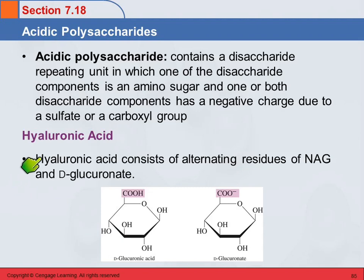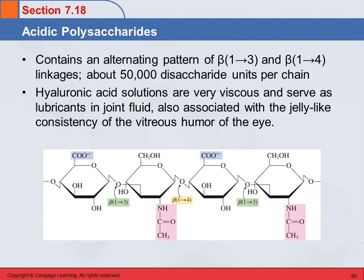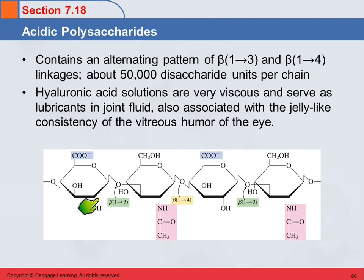Hyaluronic acid is alternating residues of NAG — N-acetylglucosamine — and glucuronate, in an alternating pattern. It's got beta-1,3 and beta-1,4 linkages and about 50,000 disaccharide units per chain. Here we've got N-acetylglucosamine and glucuronate, with a beta-1,3 here and a beta-1,4 here.